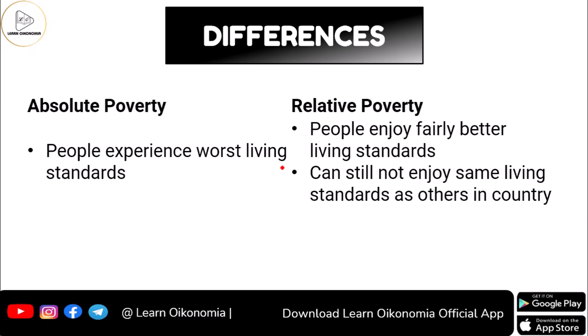In absolute poverty, people will be experiencing the worst living standard because the income they have is just sufficient to satisfy their basic needs. When it comes to relative poverty, people would have a better living standard — they compare their living standard with their neighbor's and try to attain a higher standard of living. However, they still cannot enjoy the same living standard as others, because the more we get rich, the more we compare ourselves with an even richer class.